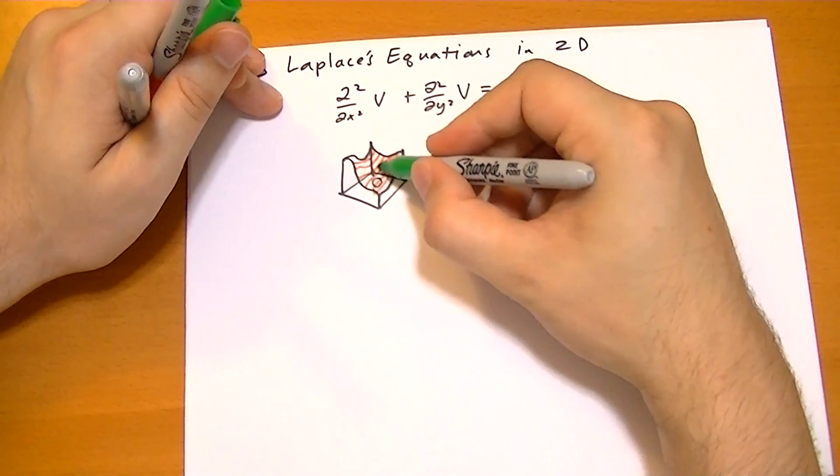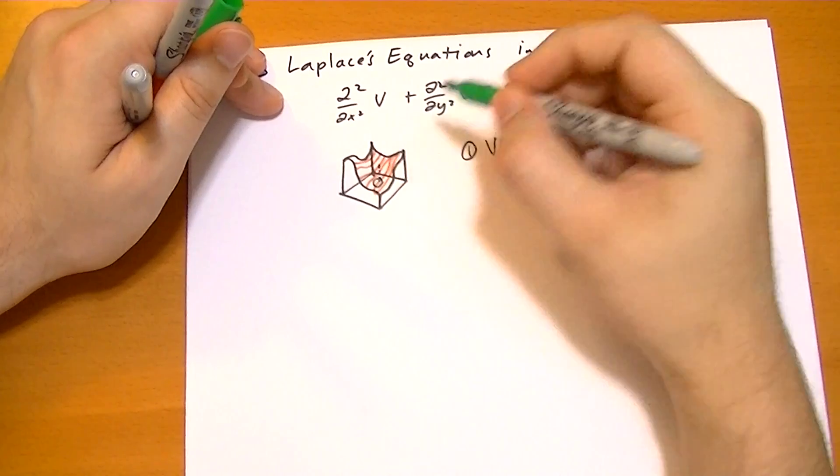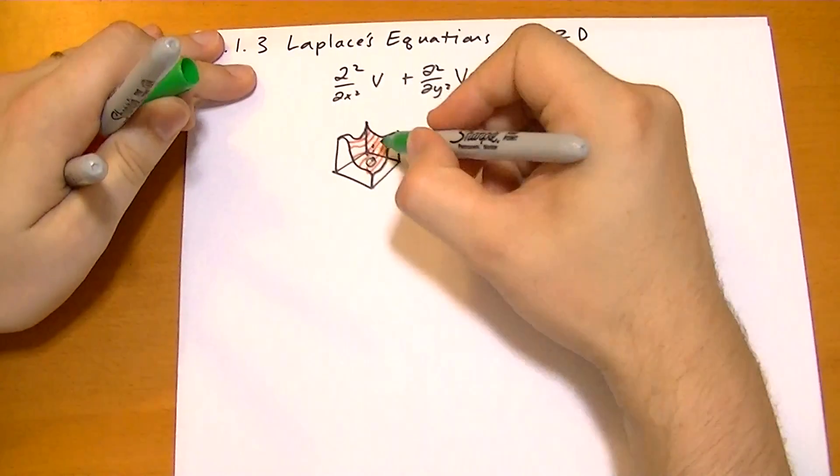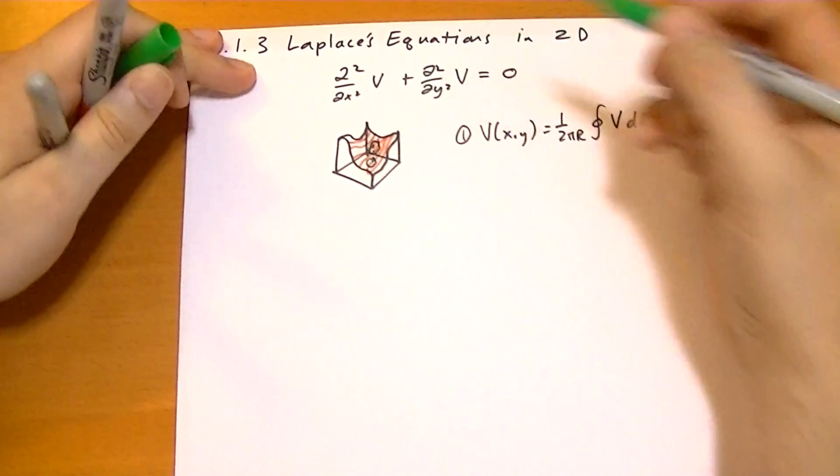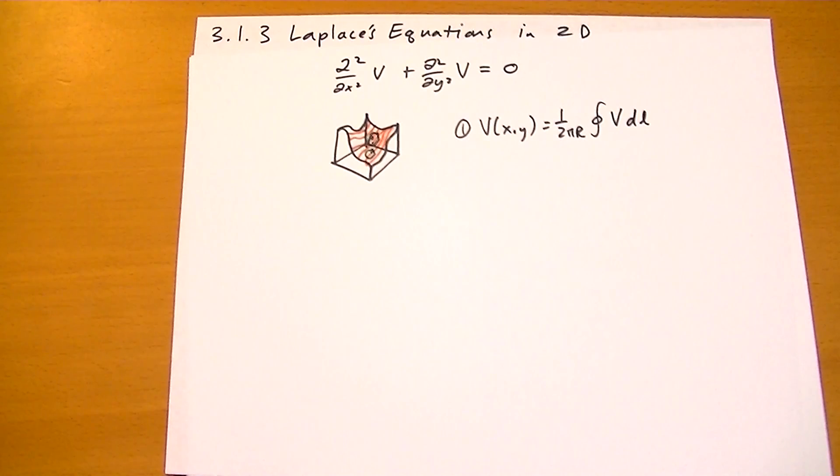And we want to find the point right above that circle. So we're going to take the circle of its neighbors and average that and we'll get the value at the point.